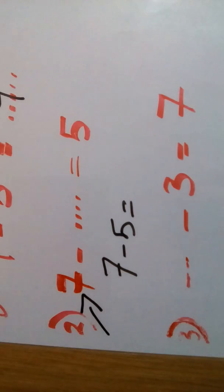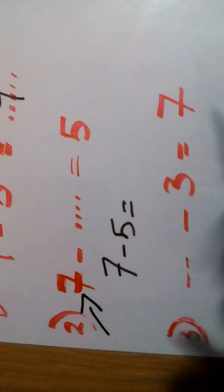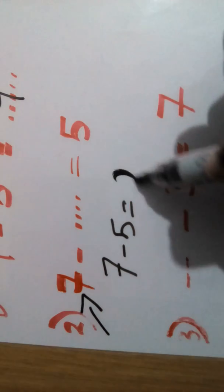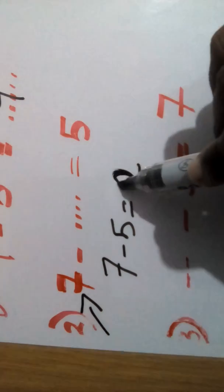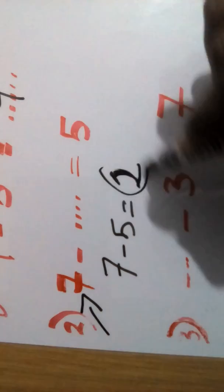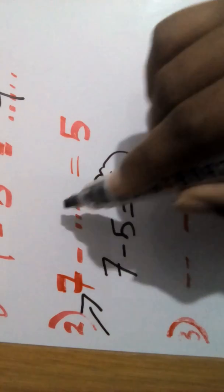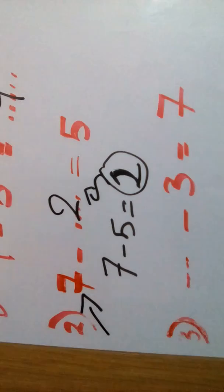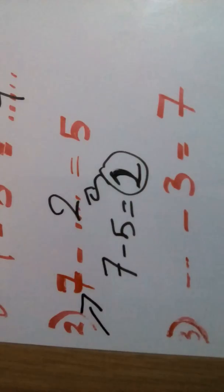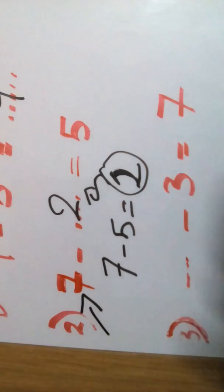Count from small to reach the big: after 5 — 6, 7 — I get 2. The missing number is 2. Let's check: if I have 7 and take 2 from 7, I will get 5. This is the right answer!